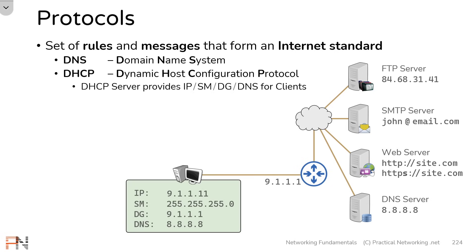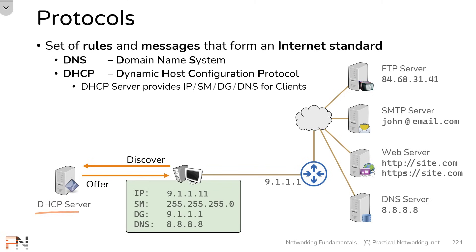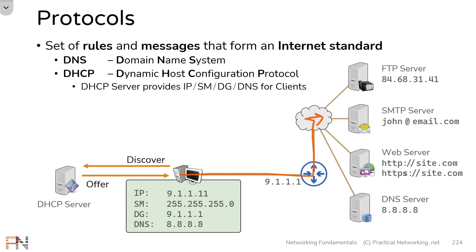What DHCP does is it allows a DHCP server to provide an IP address, a mask, a default gateway, and a DNS server for any client. This is actually what happens every time you connect to a new Wi-Fi network. Your host will send a DHCP discover message to discover the DHCP server, and then the DHCP server will provide these four things in response back to the client. Then your client has everything it needs in order to speak to the internet. That is how, every time you connect to a new Wi-Fi network, your phone or laptop automatically acquires the information it needs in order to speak to the internet.